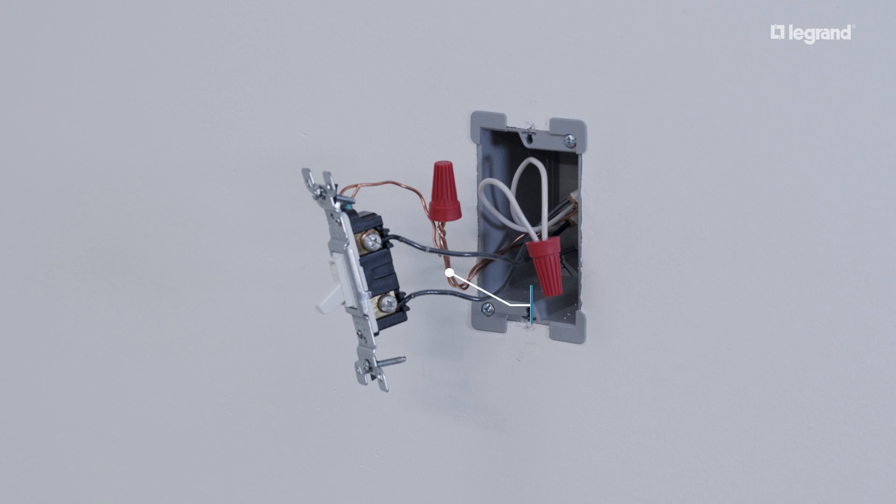The ground wire, usually a green or bare copper wire, provides a safe path for electricity in case of a short circuit.